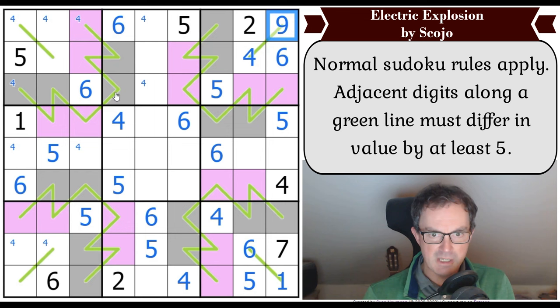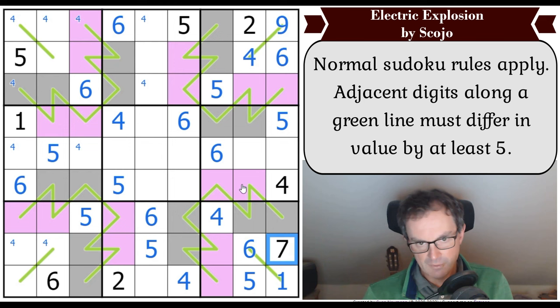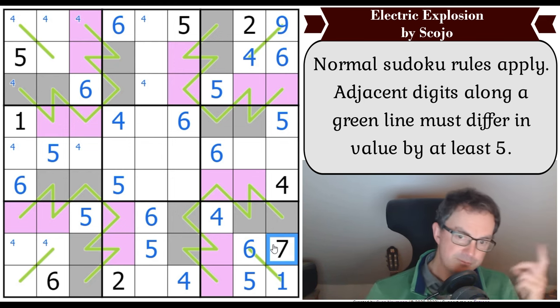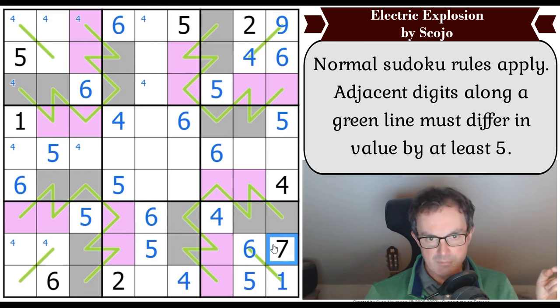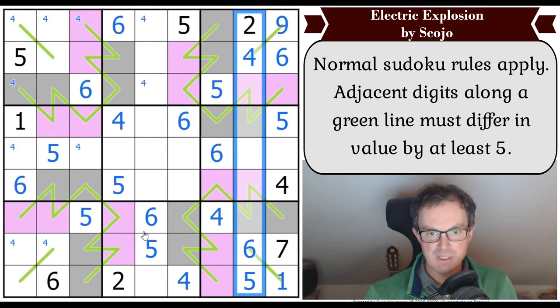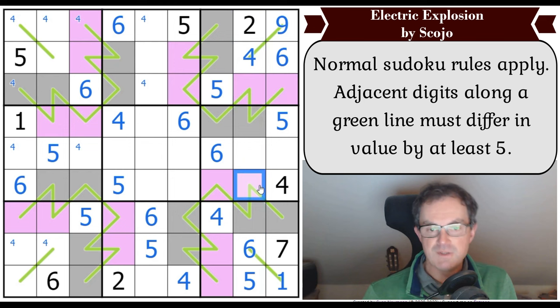Let's try threes and sevens then, if fours and sixes haven't yielded enough fruit. I've got one given seven, no given threes. Seven, if it appears on a line, can only go next to one and two. Where is seven in column eight? And the answer is in no places, absolutely no places that are on lines. Because if you put seven there, this has to be a one, two pair and that breaks.